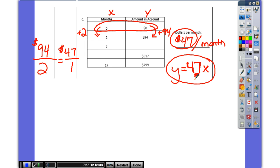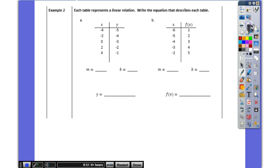We need to figure out the missing boxes here. So what do I do here? I put 7 in for my X. What's 47 times 7? $329. What month did I have $517? 11. How do I figure it out? What do you do on your calculators? Take 517 and divide it by $47. And I get 11.